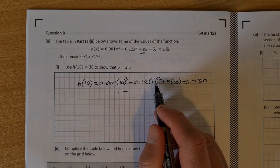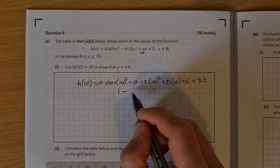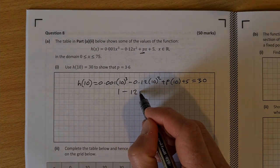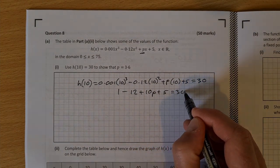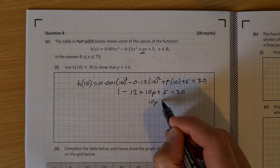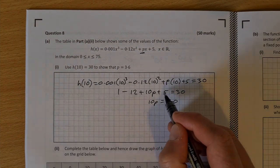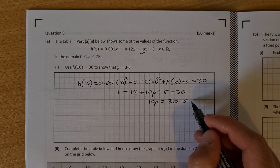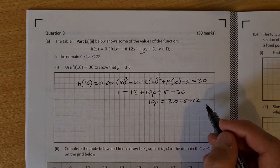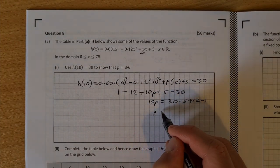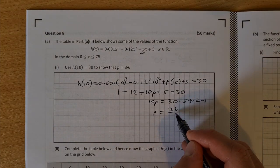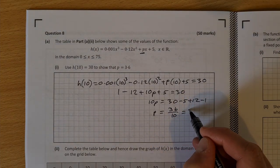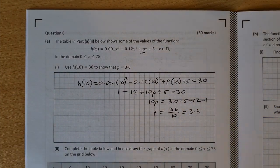Minus 10 squared is 100, times 0.12 is 12, plus 10p plus 5 is equal to 30. So 10p is equal to 30 minus 5 plus 12 minus 1. So p is equal to 36 over 10, which is equal to 3.6, which is what was required.